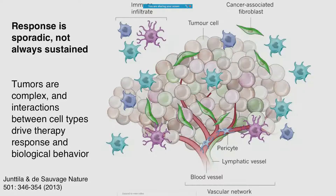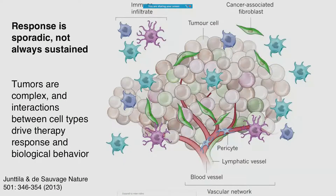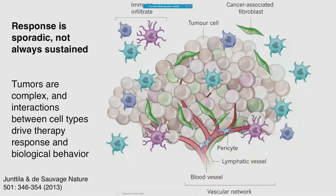Tumors, as we're beginning to realize more and more, are not just blobs of cancer cells — they're actually a complex tissue with various cell types in that mixture interacting in different ways. And the relative proportions of the different cell types that you have in the tumor and how they're interacting with each other are the things which are actually driving the response of tumors to therapy and their biological behavior.